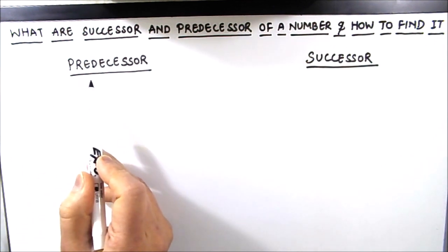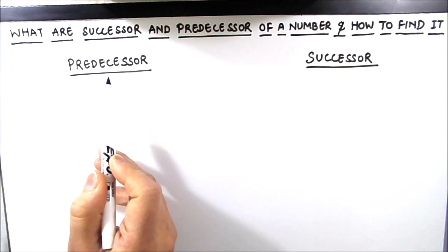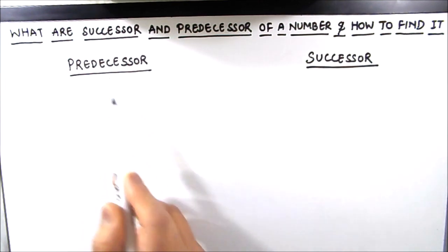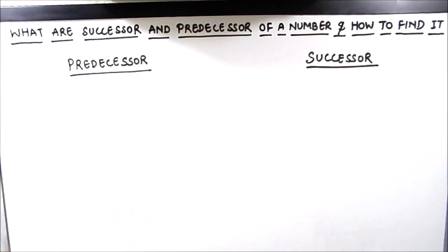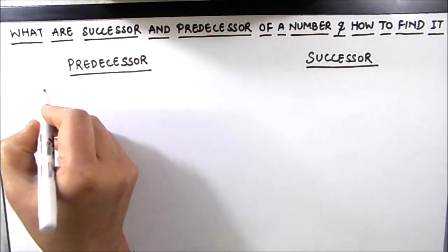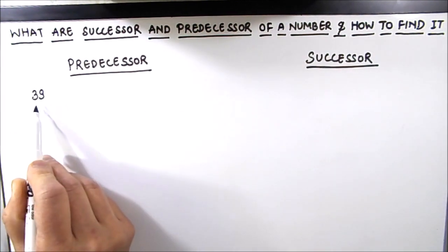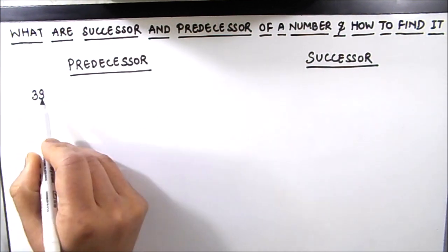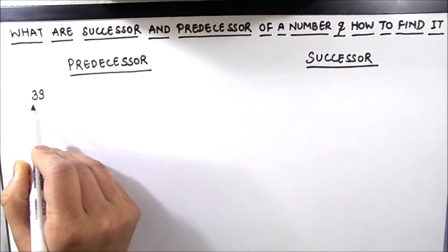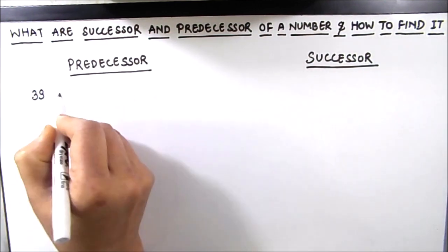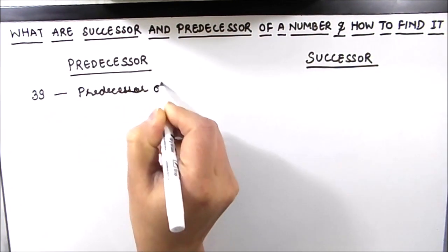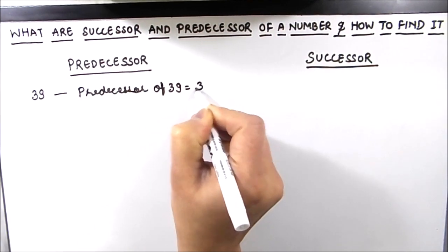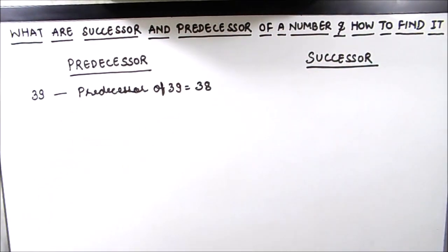A predecessor is a number or value that precedes the original number — that means it comes immediately before the number. For example, if we want to find the predecessor of 39, the number which comes just before 39 will be its predecessor, so the predecessor of 39 will be 38.